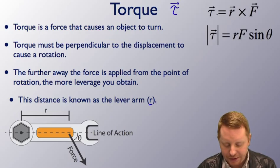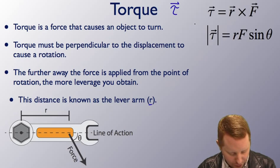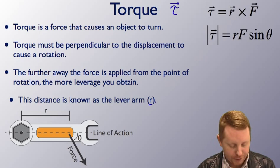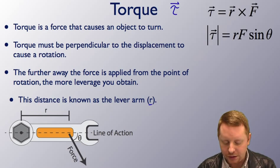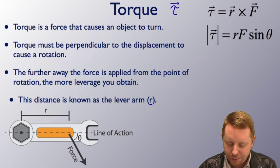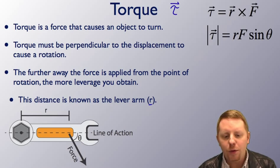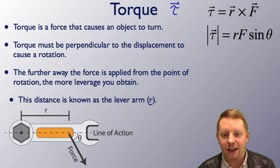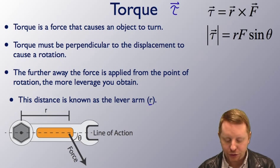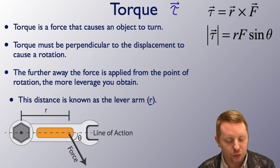The torque vector is equal to the R vector, the position vector from the point of rotation to that force, crossed with the force that's applied. This is a cross product or vector product. We'll focus on its magnitude to say the magnitude of the torque vector is R times F times the sine of that angle theta. We'll get the direction later on from the right hand rule.